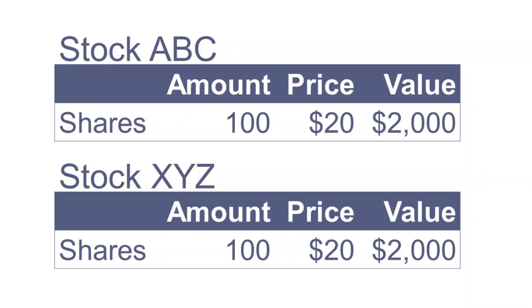The easiest way to show this is with an example. Say we're looking at two companies, ABC and XYZ. Just to make our lives easier, we'll say that we own 100 shares of each, and they're both trading for $20 per share. That means we have $2,000 invested in each company.